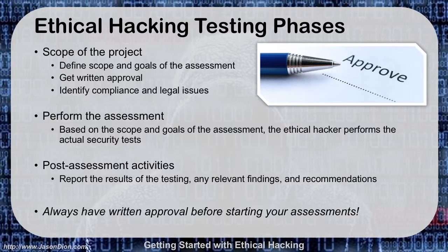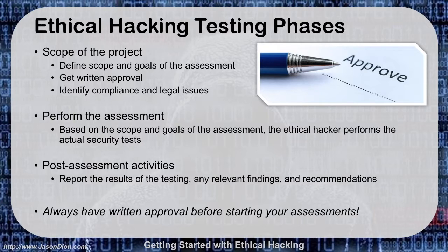Then we're going to do our post-assessment activities. This is where we report the results of the test, any relevant findings or vulnerabilities, and any recommendations. When you do your recommendations, put them in priority order. No organization has enough money to secure everything perfectly. If you give them a prioritized list from 1 to 20, they'll start with 1, and if they only get down to number 11 or 12 because they've run out of money, that's better than giving them a random list. You always want to have your written approval before starting your assessments — I can't say that enough. Otherwise, you can be tried under the Computer Fraud and Abuse Act.